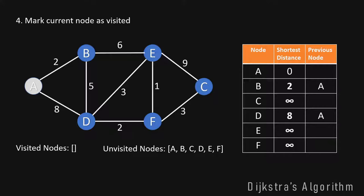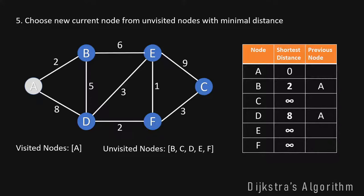The next step is to pick a new current node to explore the graph further. We always choose the node with the current minimal distance among all unvisited nodes. A has distance 0 but is already visited. B is unvisited with distance 2, D has distance 8, and all other nodes have distance infinity. So B has the current shortest distance and becomes our current node.